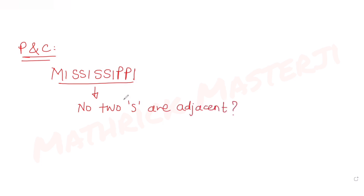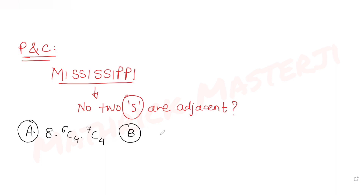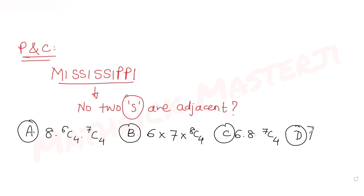So no two S's should be together in the letters of MISSISSIPPI. The answer choices given are: (A) 8 × 6C4 × 7C4, (B) 6 × 7 × 8C4, (C) 6 × 8 × 7C4, and (D) 7 × 6C4 × 8C4. We need to figure out which is correct.